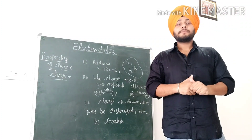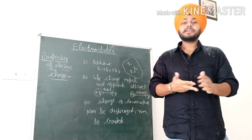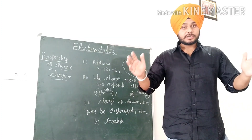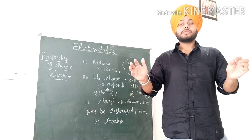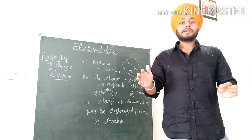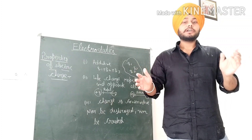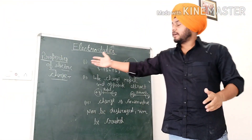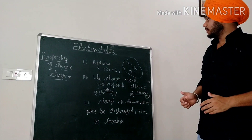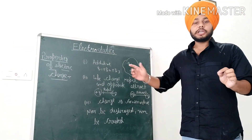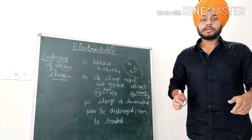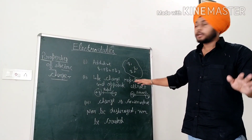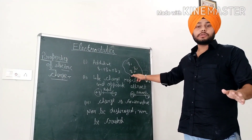Electric charge has certain properties. The same charge produces a repulsive force, while opposite charges produce an attractive force. The maximum amount of power refers to the charge concentration, and these properties govern how charged particles interact.